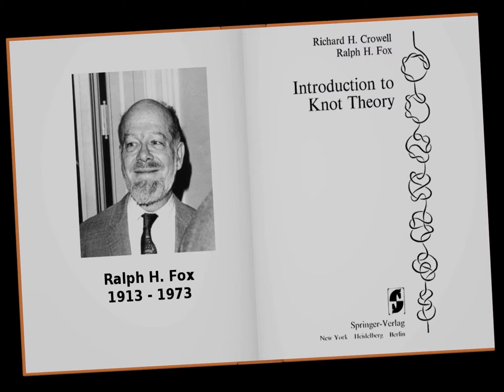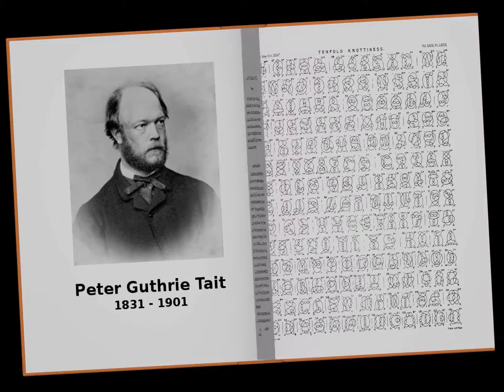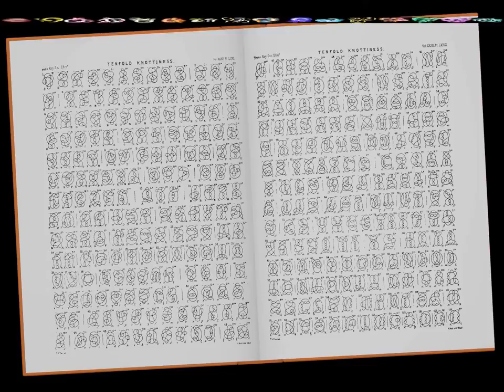Three-coloring was introduced by Fox about 60 years ago as a simple example for students to understand a more theoretical construction. The first classification of knots was made by physicists in the second half of the 19th century when Tait filled out the first tables of knots.